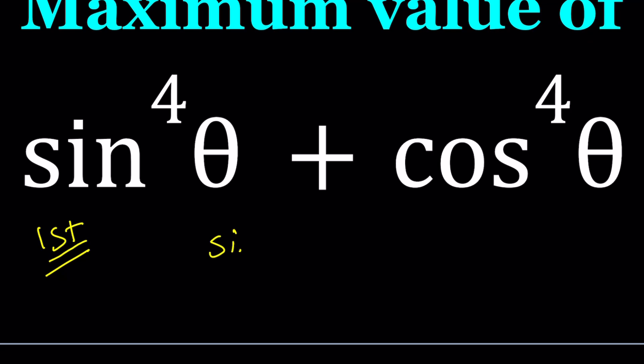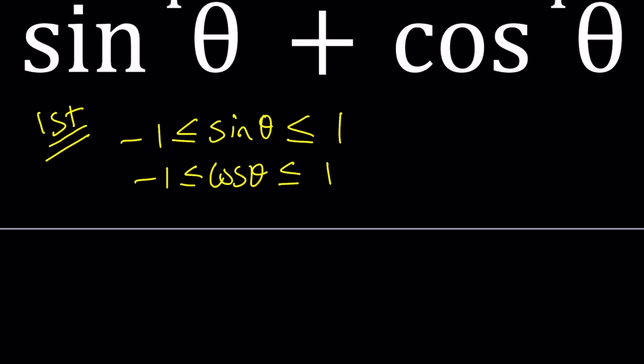Sine θ, and the same thing goes for cosine θ, must be between -1 and 1 inclusive if θ is a real number. We're talking about real numbers here. Using this idea, if I raise both sides to the fourth power, then I should not be getting any negative values, but I could still get 0. So sin⁴θ is going to be between 0 and 1.